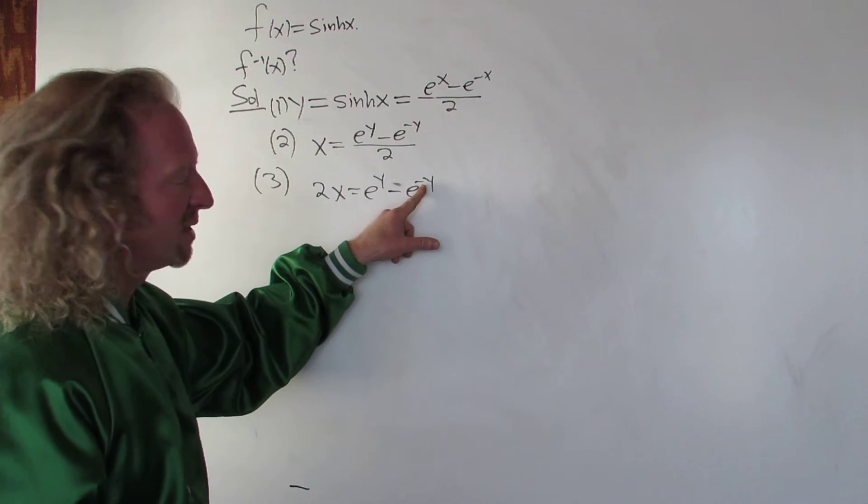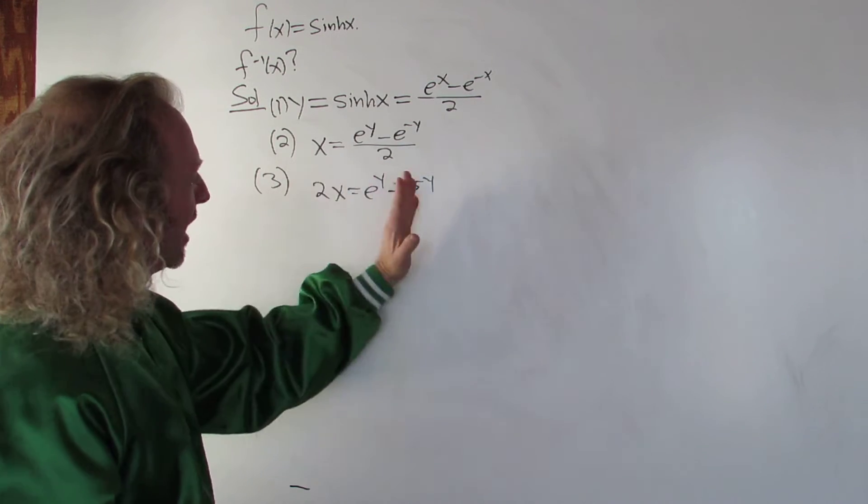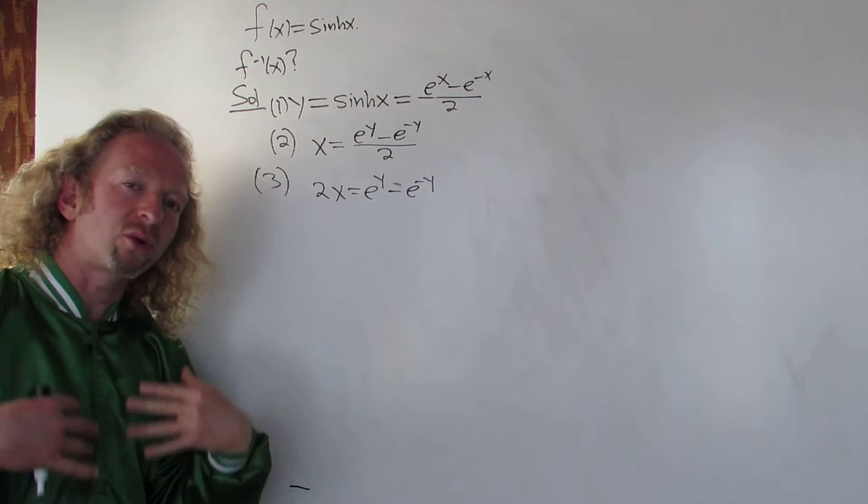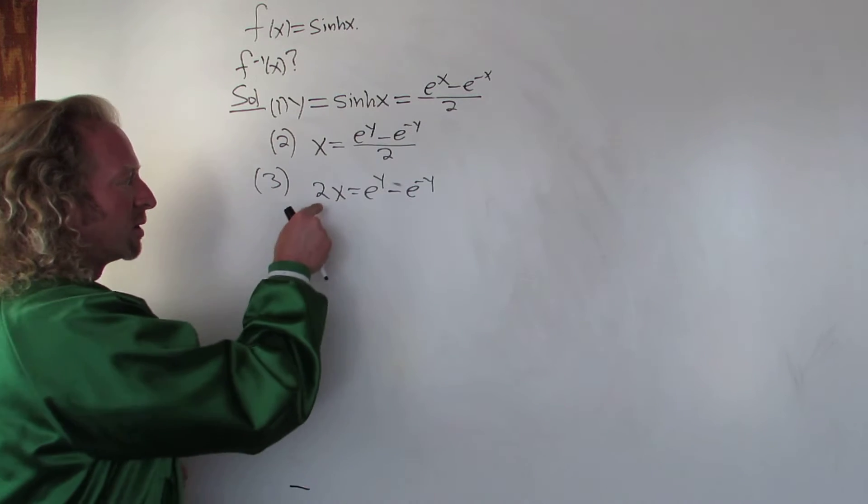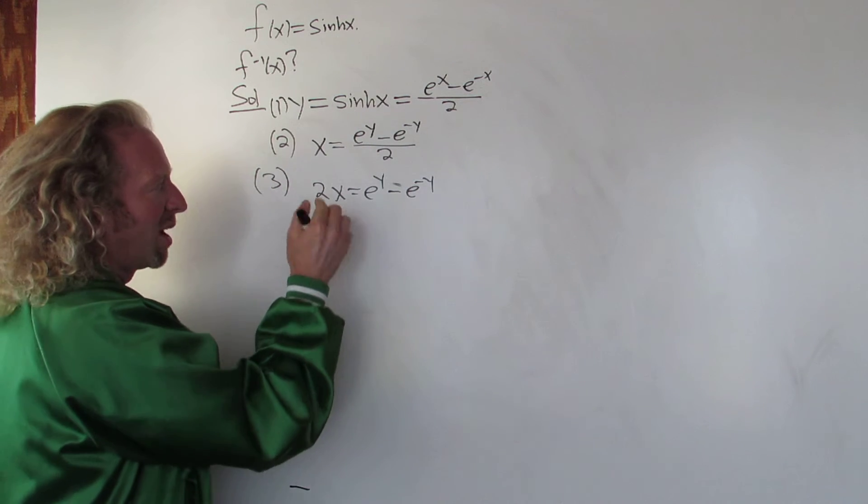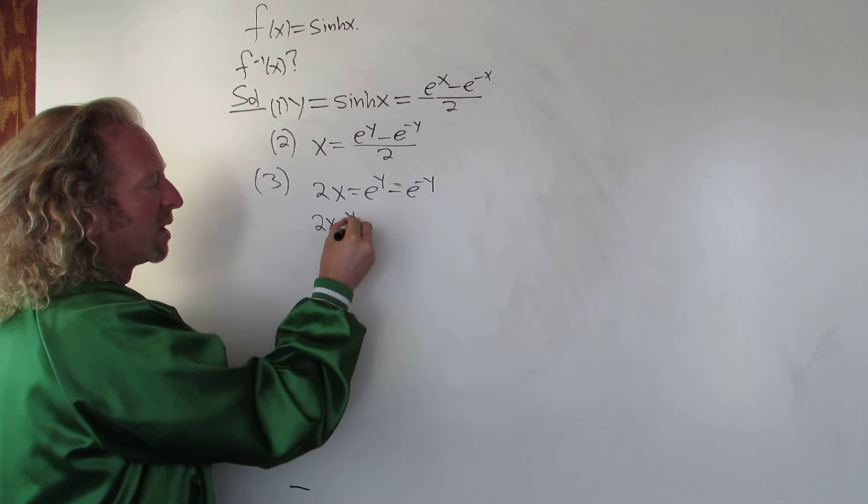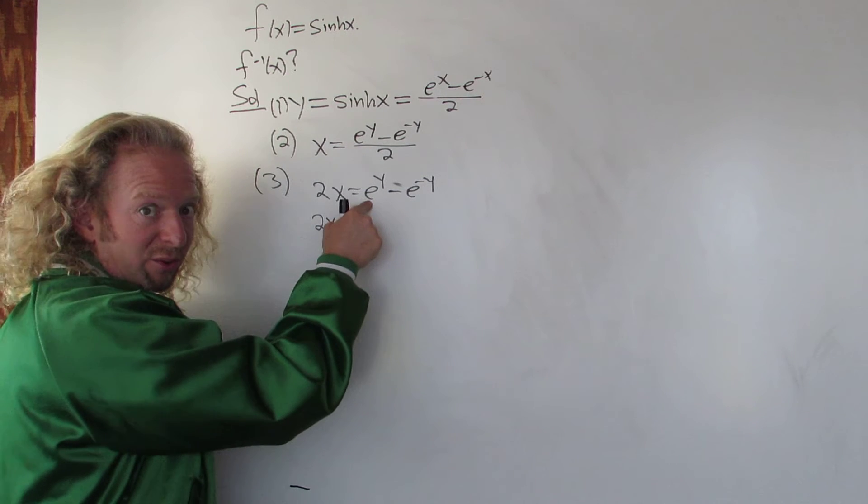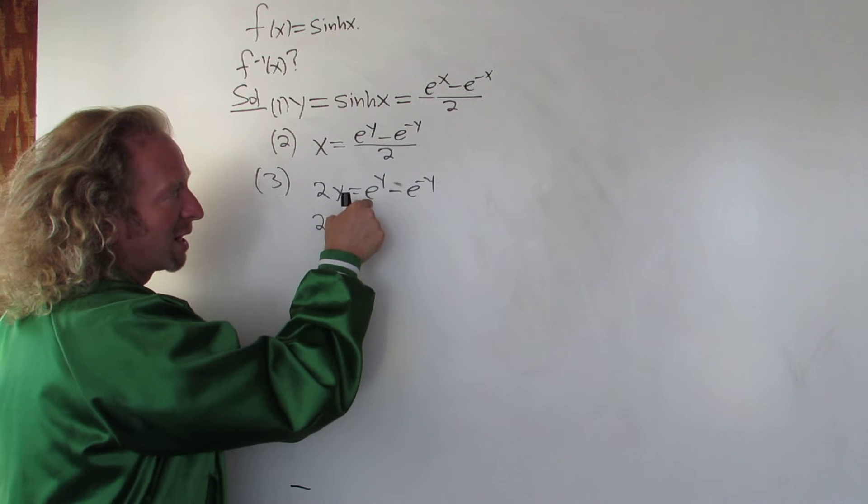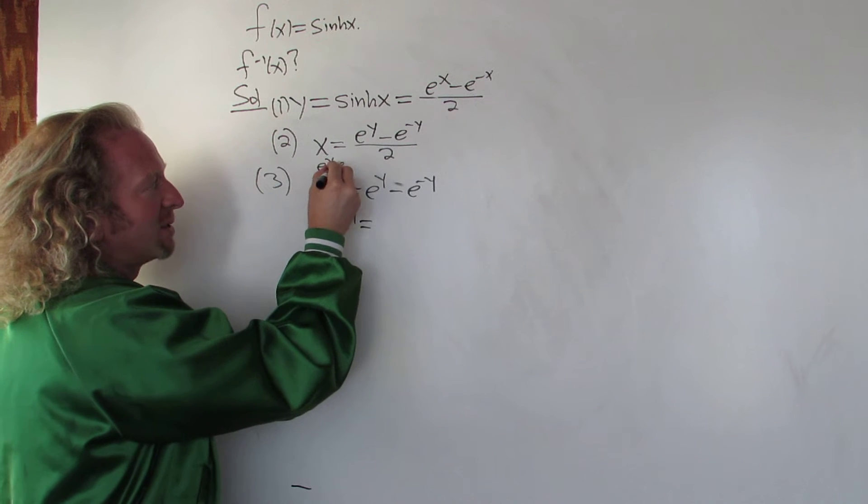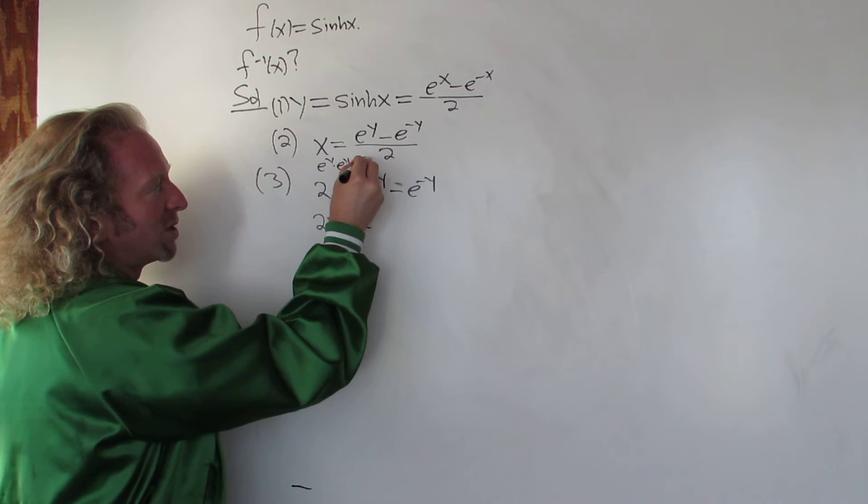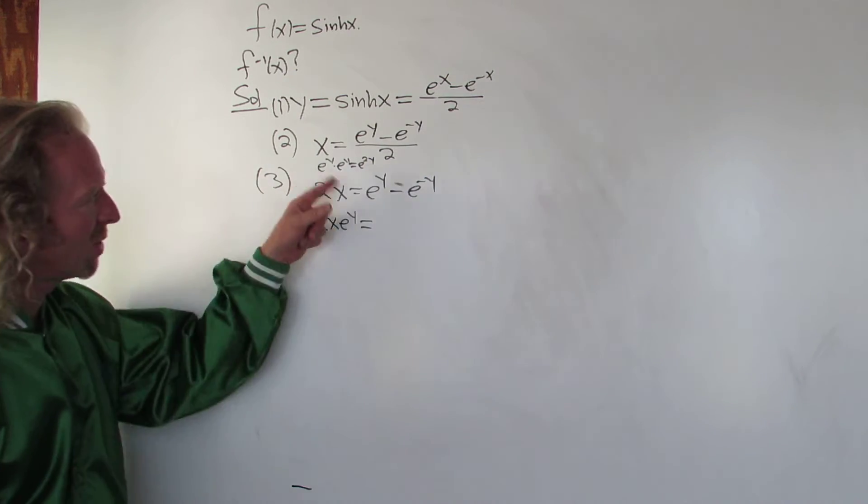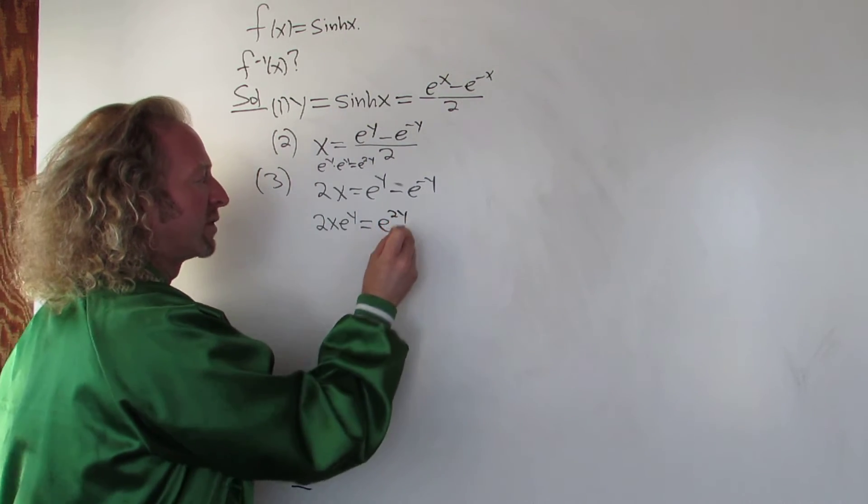So in order to do that, we have to get rid of this e to the negative y. So let's multiply everything by e to the y to try to create that quadratic equation. So if you multiply the left-hand side by e to the y, you just get 2x e to the y. Multiplying this by e to the y, right, you're going to get e to the y times e to the y. E to the y times e to the y is e to the y plus y, which is e to the 2y, right? So you add the exponents. So this is e to the 2y, beautiful stuff.